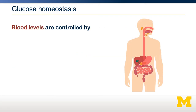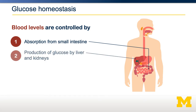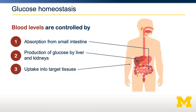The levels of glucose in the blood are controlled by three processes. The first is how quickly and to what extent we absorb glucose from our small intestine into our blood. A second source of glucose is the production of glucose by the liver and the kidneys. Those are balanced by the uptake and disposal of glucose into target tissues – muscle, fat, liver, brain.